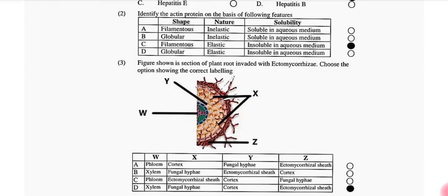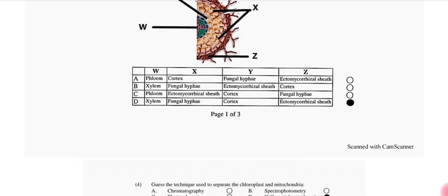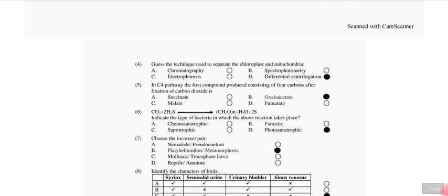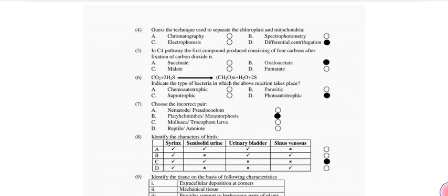Figure shows cross-section of plant root involved in ectomycorrhizae. Choose the correct option. So that is option D: xylem, fungal hyphae, cortex, ectomycorrhizal sheath. Guess the technique used to separate the chloroplasts and mitochondria. That is differential centrifugation. In C4 pathway, the first compound produced consisting of 4 carbons after fixation of carbon dioxide is oxaloacetate.